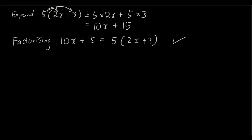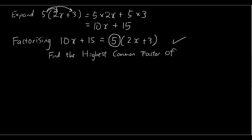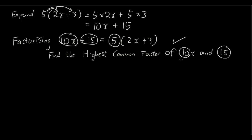But how do we know that the number in front is 5? What you do is use a technique called finding the highest common factor — find the highest common factor of the two terms that we want to factorize: 10x and 15. You can see that we have 10 and 15 and the highest common factor for both of them is just 5.